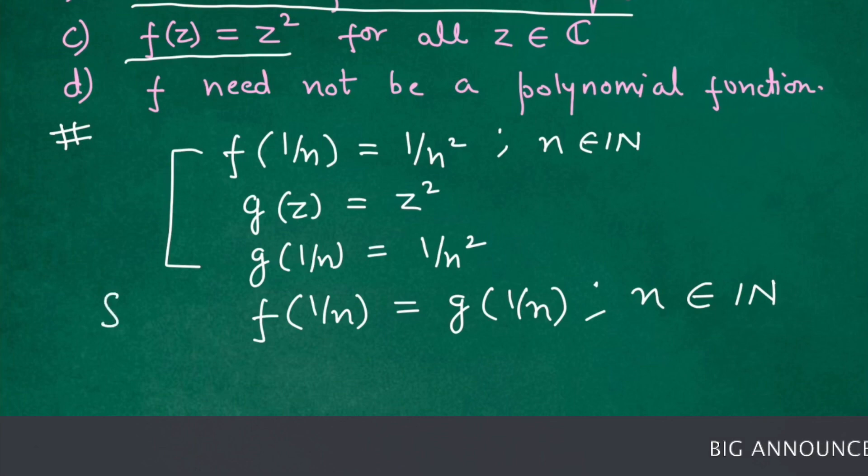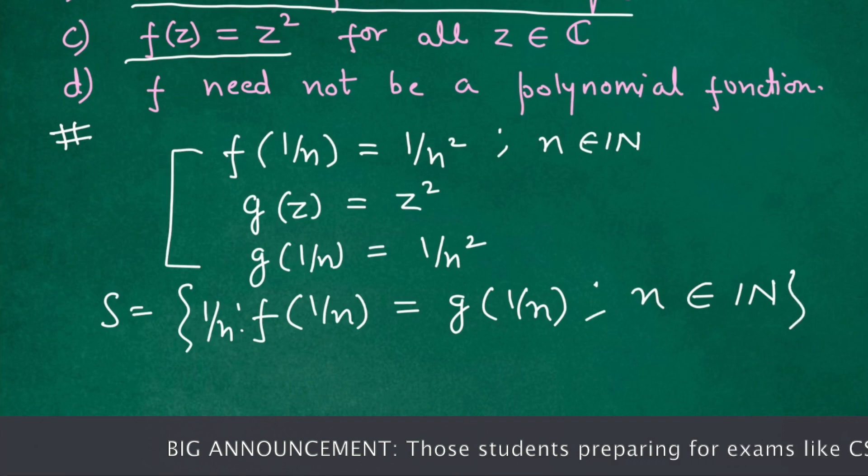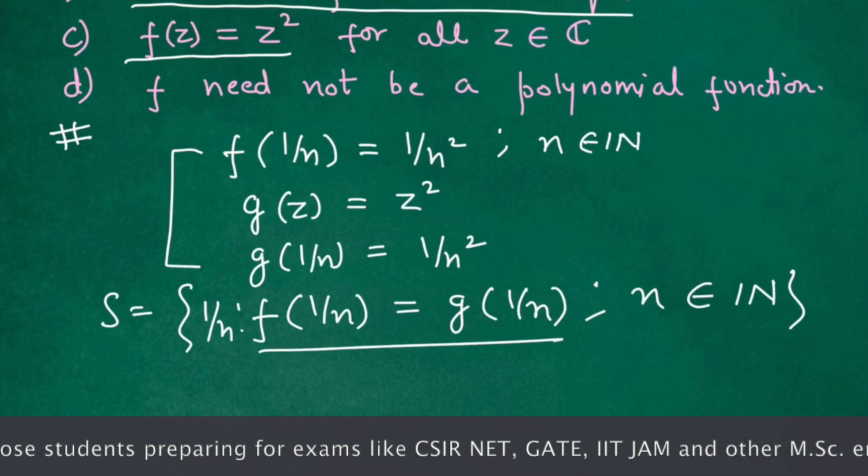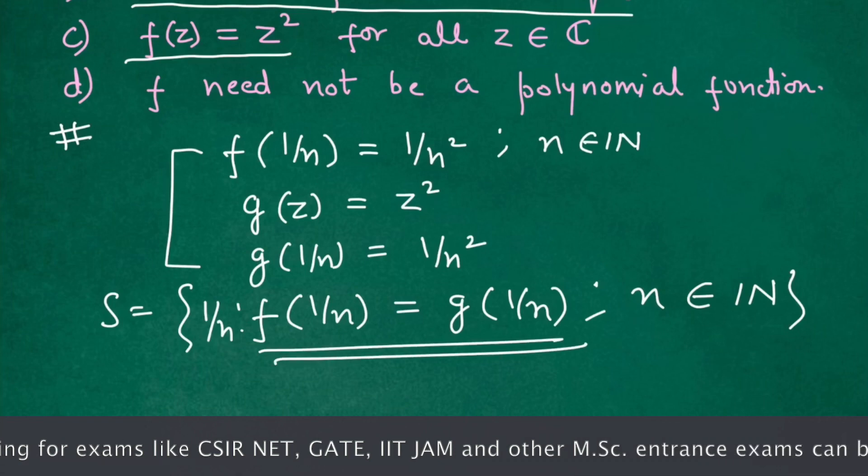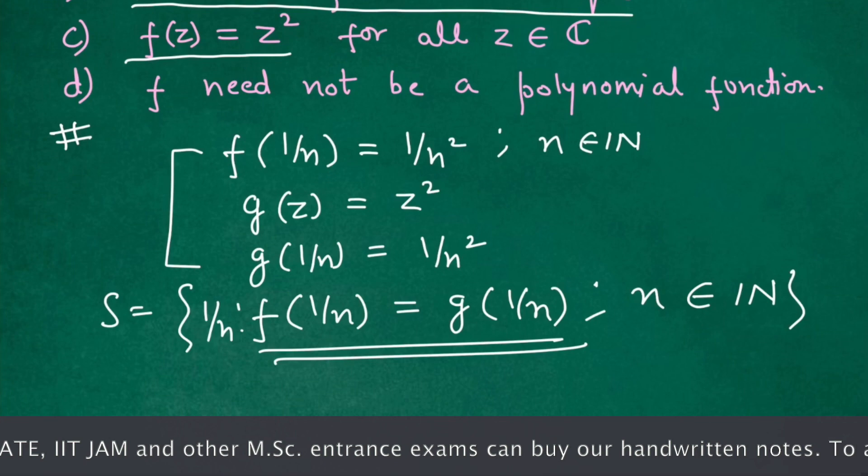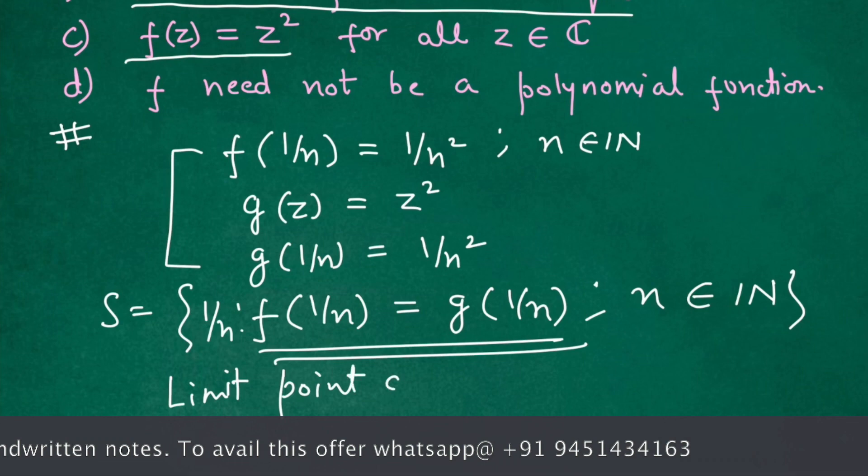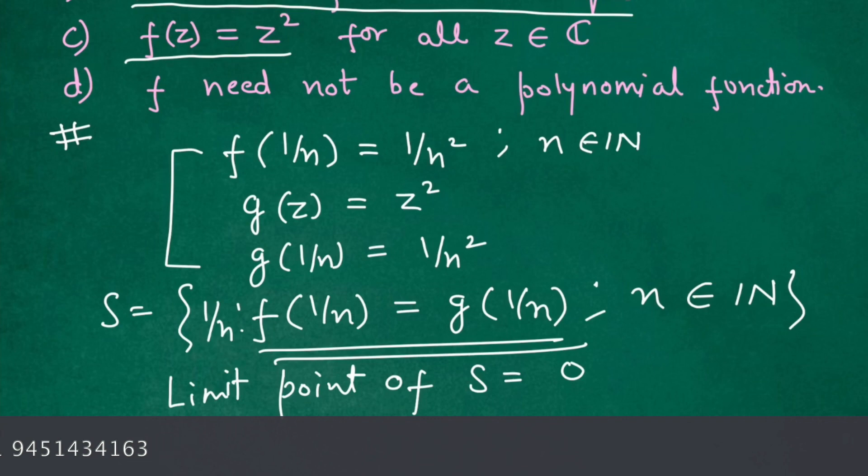If we form set S such that it contains the element 1/n, this set contains 1/n where n is natural number and f(1/n) equals g(1/n), and limit point of set S is 0. We know that sequence 1/n converges to 0, so limit point of set S is 0.